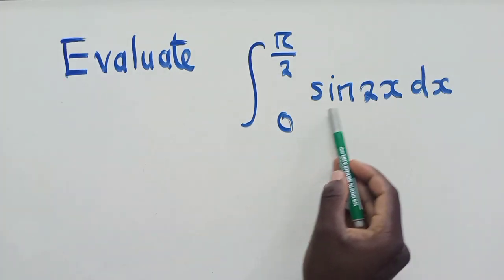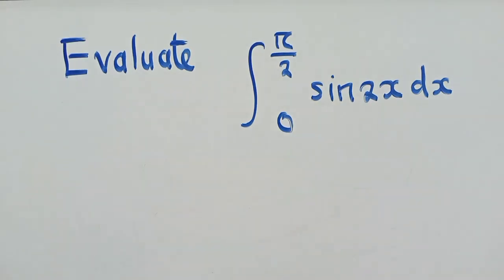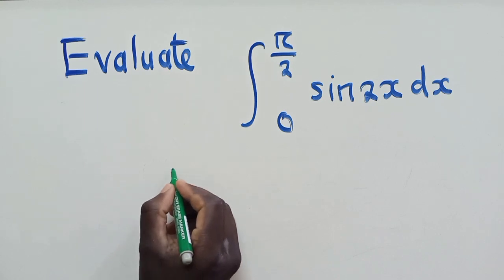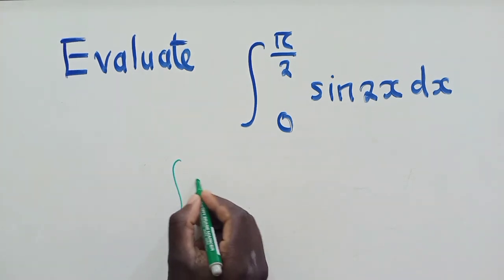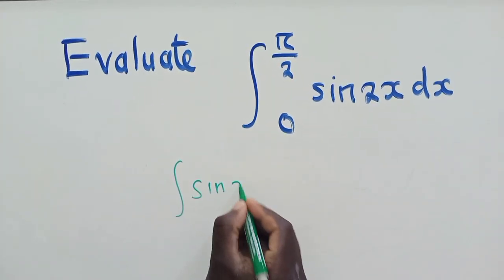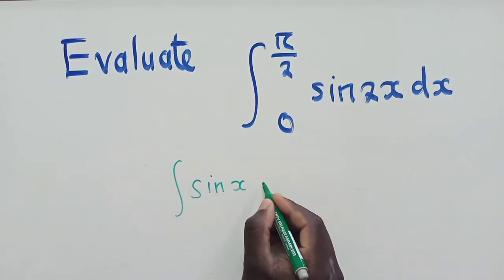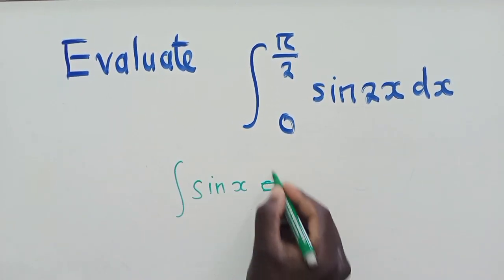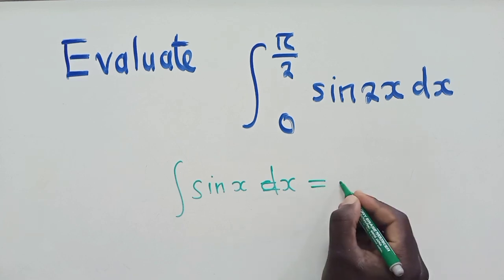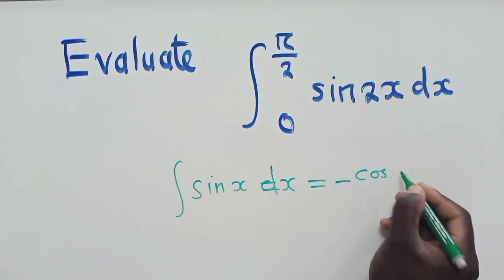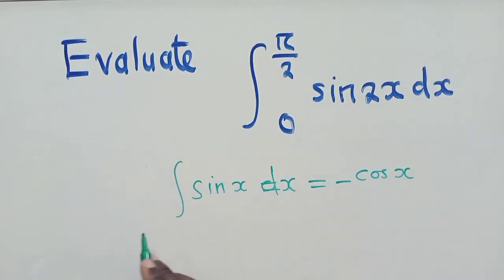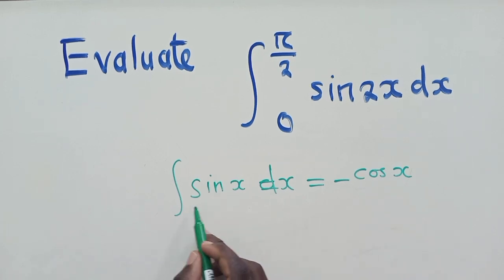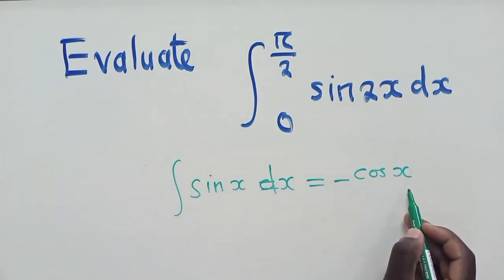All right, so for us to be able to integrate this, we first need to know that the integral of sin x with respect to x will be equal to negative cos x. So we have to know this. The integral of this is equal to this.